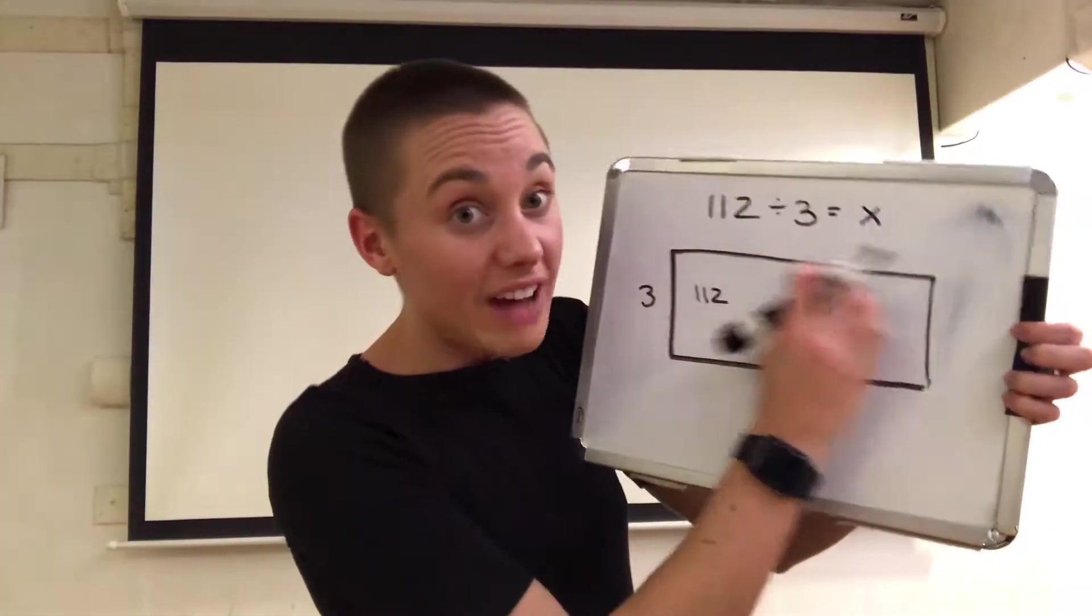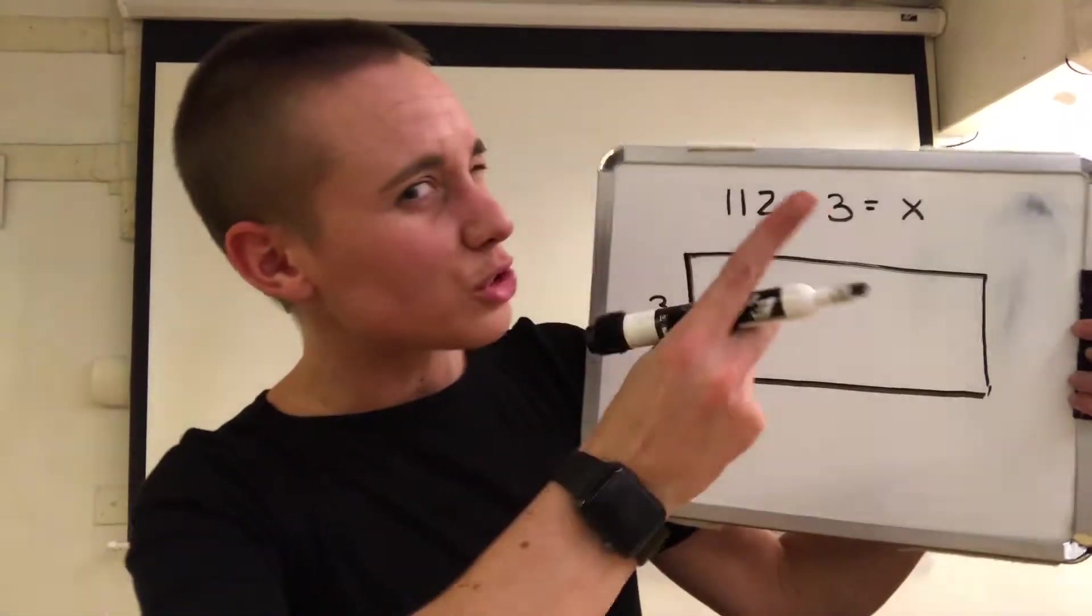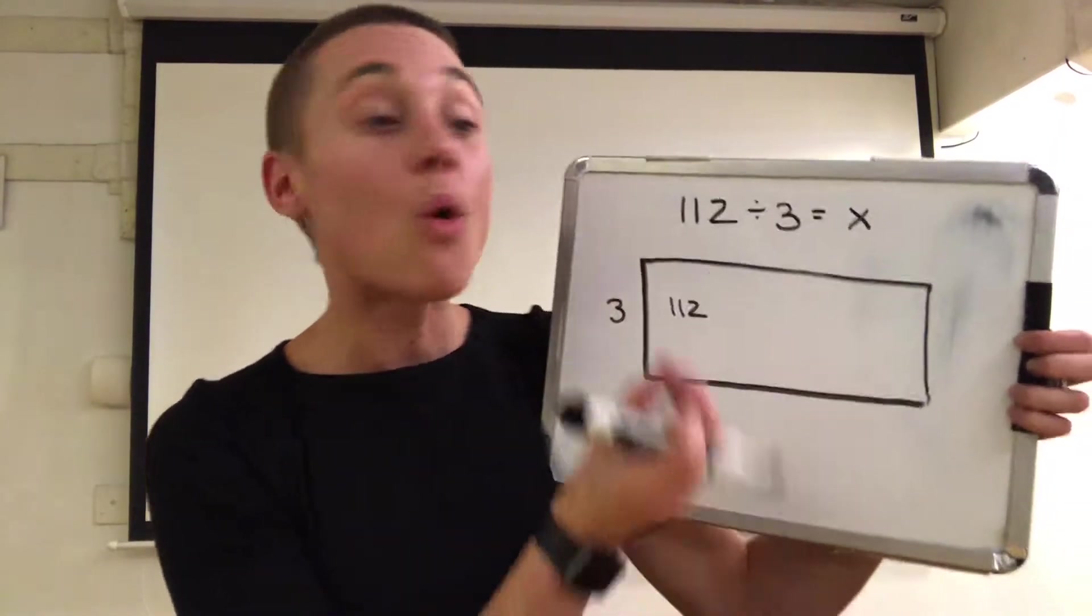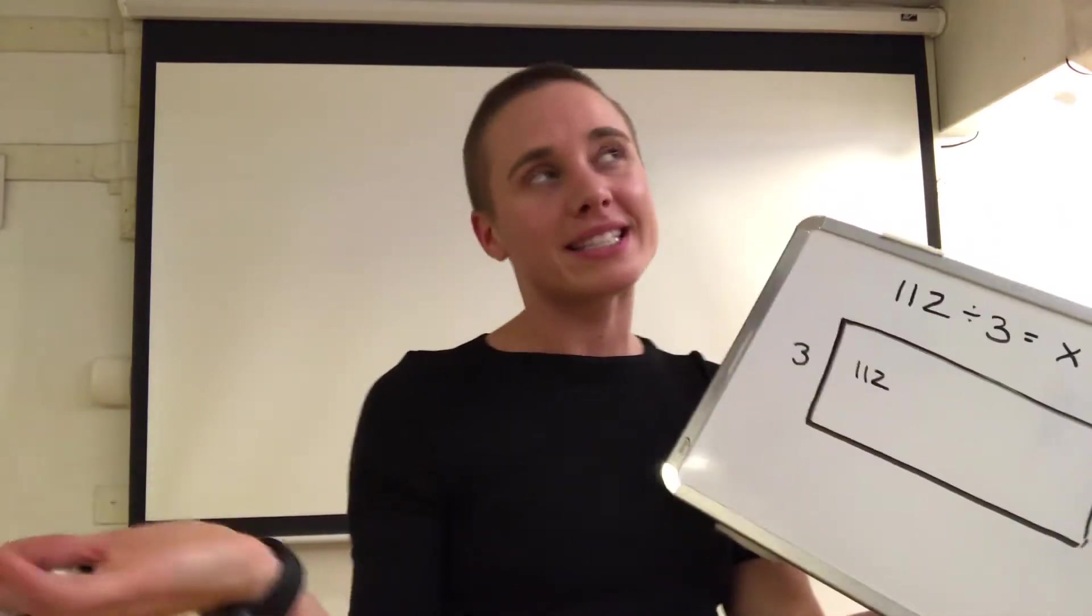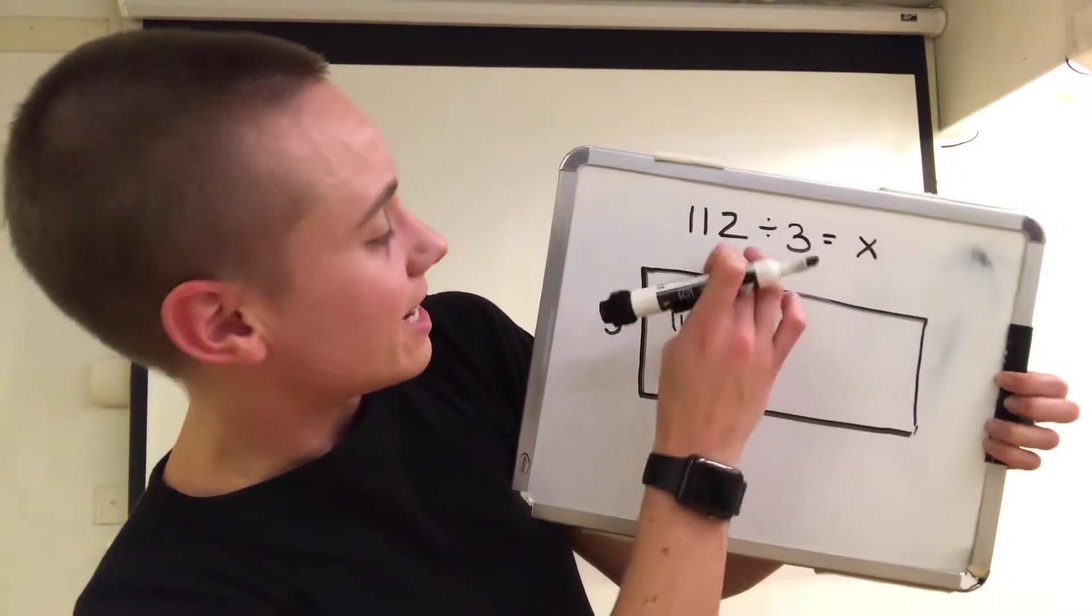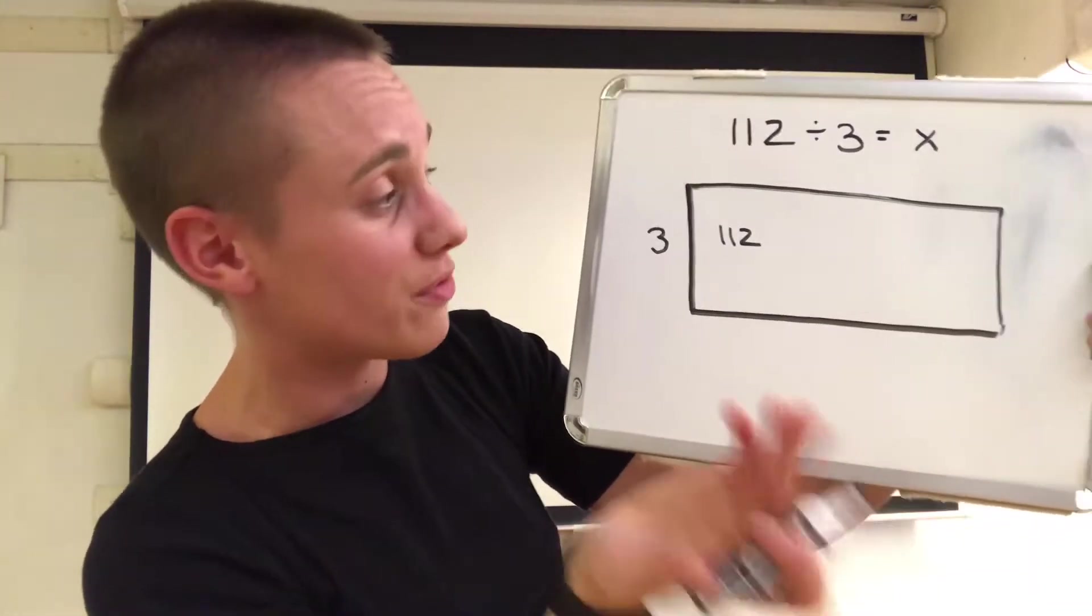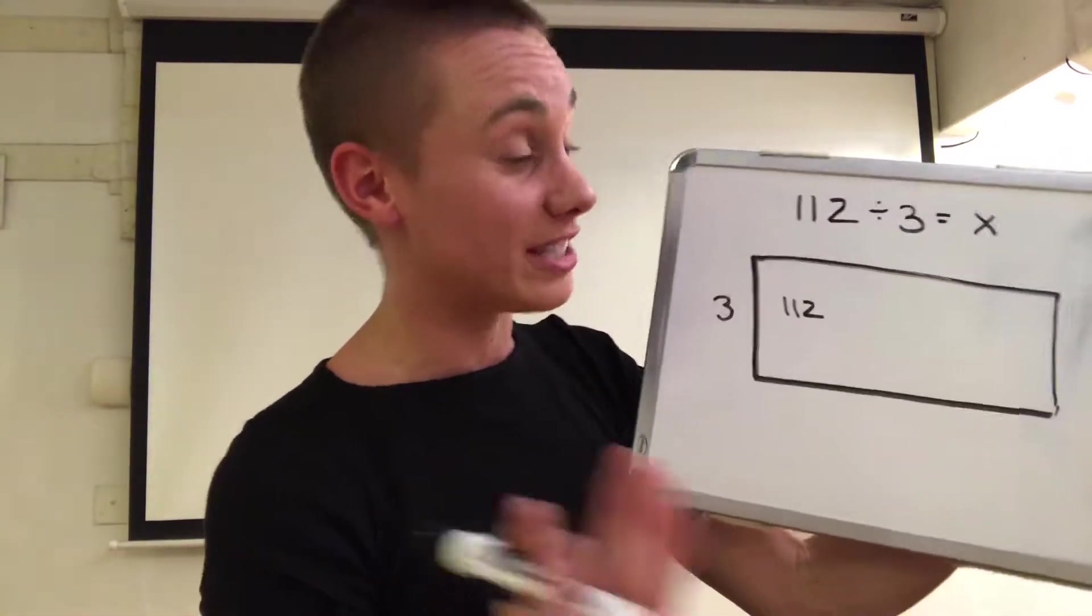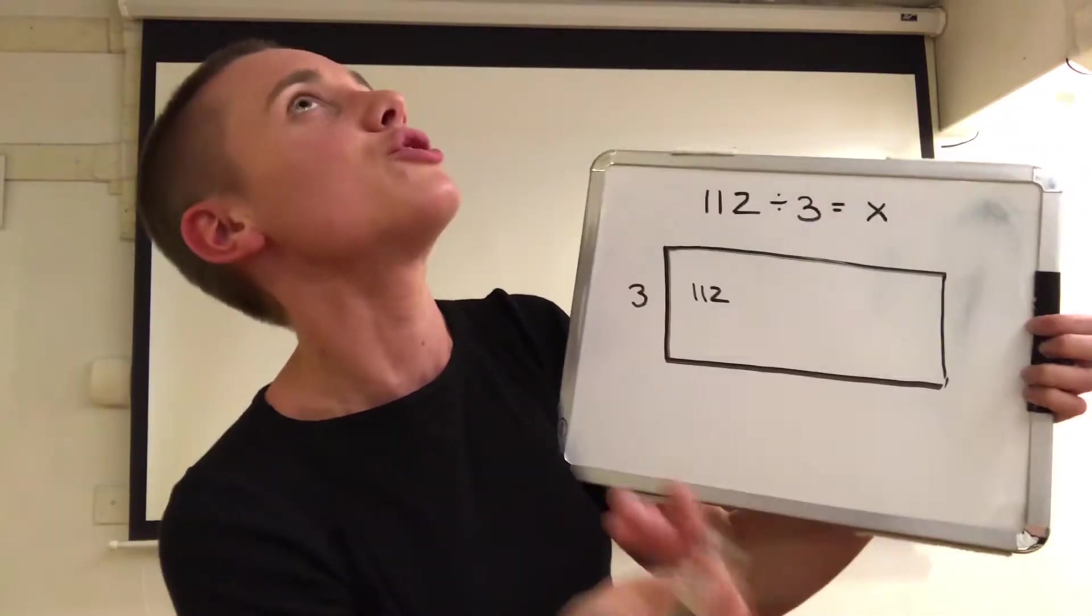So to find the length, I'm going to ask myself: what is a multiple of 3 that is close to but not more than 112? First I might say I want to use 10 as my length because 10 times 3 equals 30. But we're in fourth grade and we are really good at using our zero trick to do multiplication facts. So let's choose something bigger.